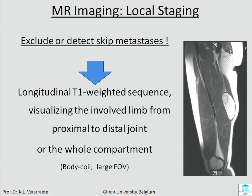Just as in bone tumors, the first sequence is a longitudinal sequence, T1, and it can be sagittal or coronal. For instance, here in the thigh, if you have a lesion which is posterior, you take a sagittal view. This is done with the body coil, and then you can change to the local coil if you want.